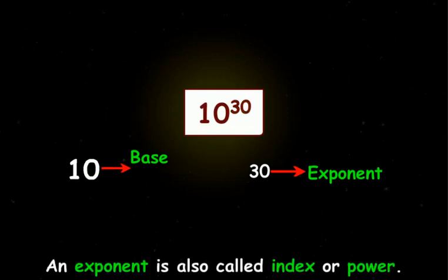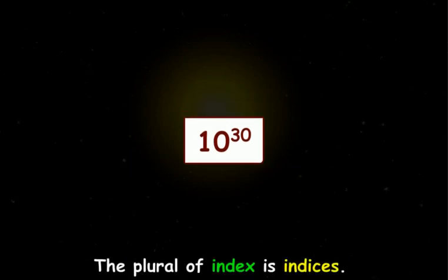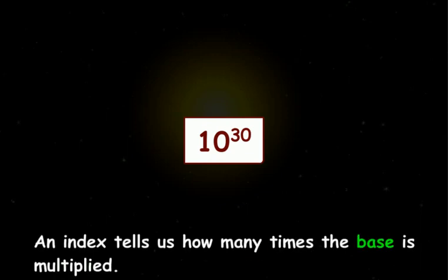An exponent is also called the index or power. The plural of index is indices. An index tells us how many times the base is multiplied.